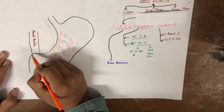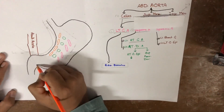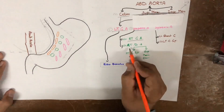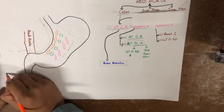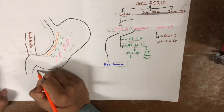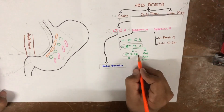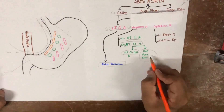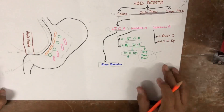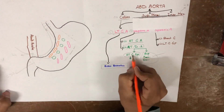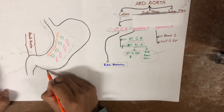The hepatic artery also gives another branch which goes posteriorly to the stomach — this dotted line shows that this artery is going to the posterior of the stomach. This artery is called the gastroduodenal artery. One branch from it is called the right gastroepiploic artery, which supplies the right side of the greater curvature of the stomach.